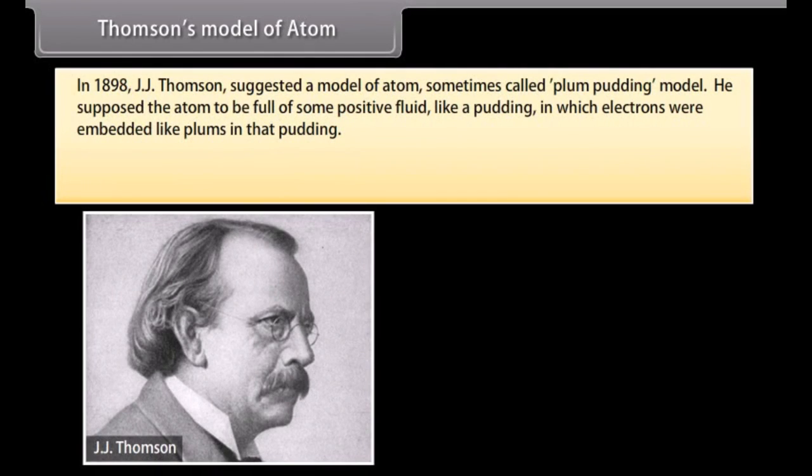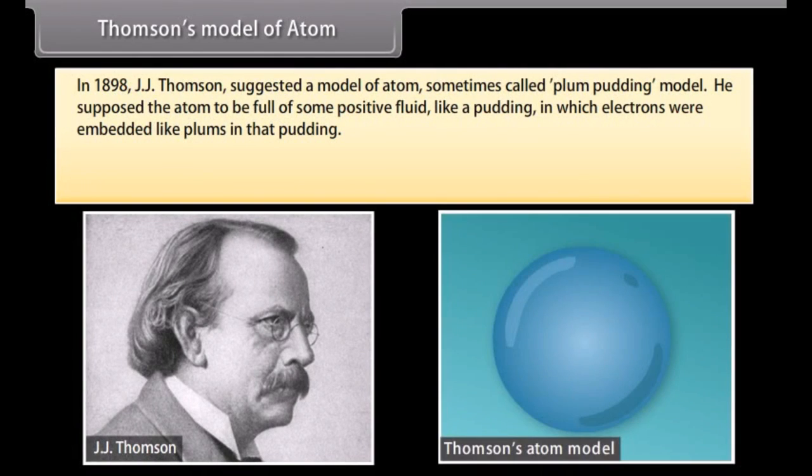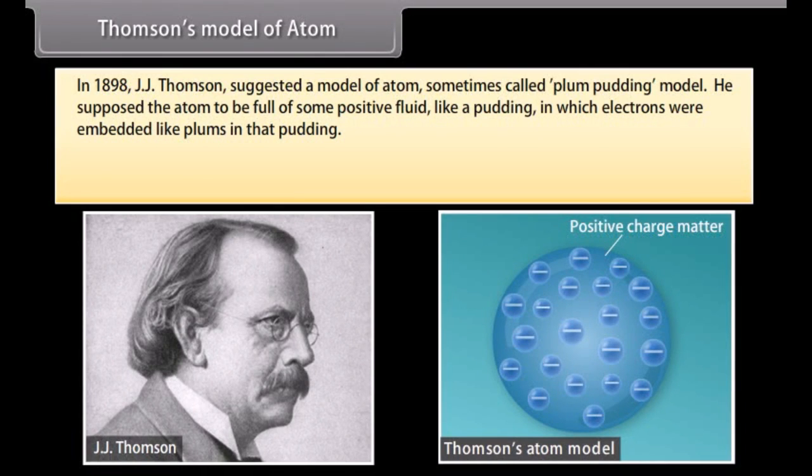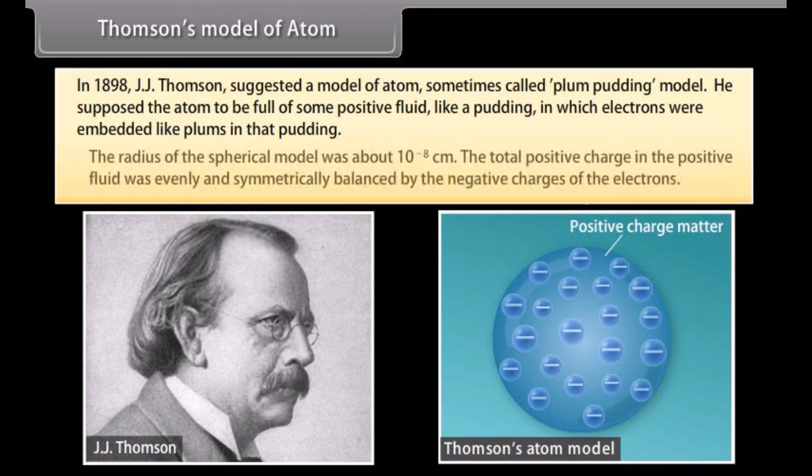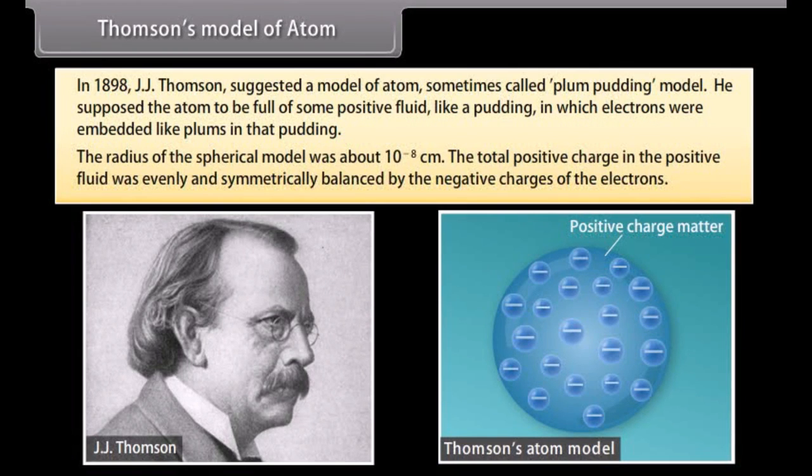Thomson's model of atom. In 1898, J.J. Thomson suggested a model of atom sometimes called plum pudding model. He supposed the atom to be full of some positive fluid, like a pudding, in which electrons were embedded like plums in that pudding. The radius of the spherical model was about 10 raised to the power minus 8 cm. The total positive charge in the positive fluid was evenly and symmetrically balanced by the negative charges of the electrons. But this model was discarded because it failed to satisfy the result of the experiments performed by Rutherford.